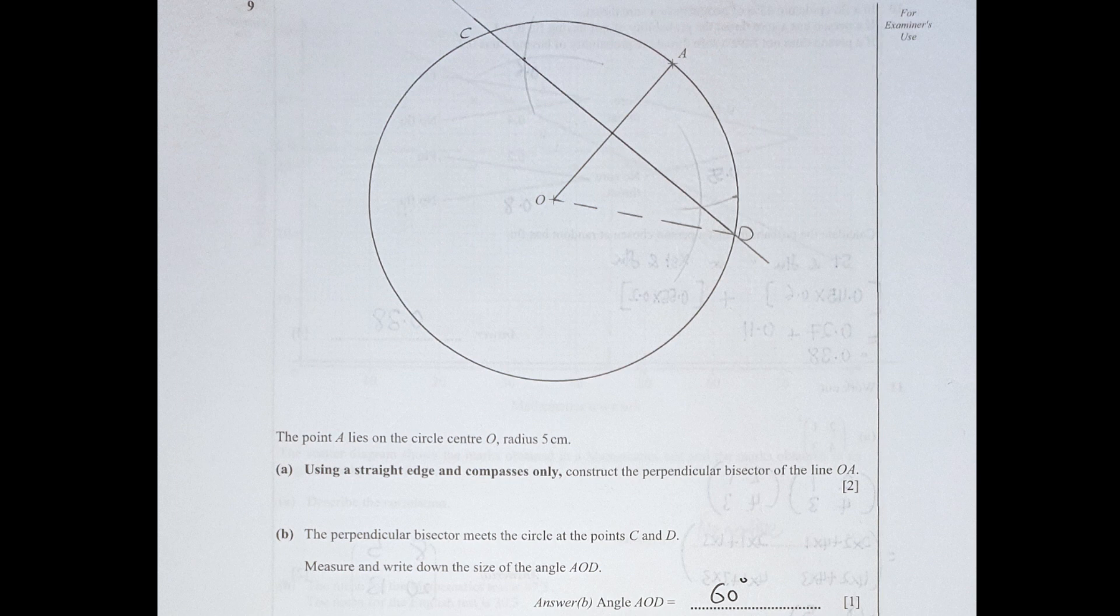The intersection will form you a line that is perpendicular to OA. Okay, the perpendicular sides meets the circle at C and T. Measure and write down the size of AOD, so CD is a random point, just put it down like what I did here. And to calculate AOD's value, this one will be 60 degrees.